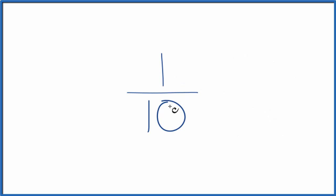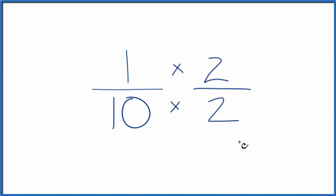To do that, we could multiply 1 over 10 times 1. We just get 1 over 10. Or we could multiply it by 2 over 2. That's because 2 divided by 2 is 1. Again, we're just multiplying by 1.